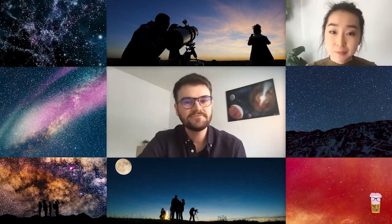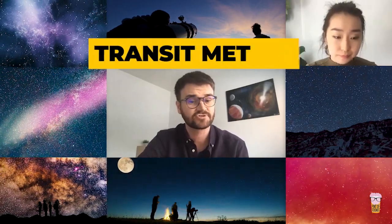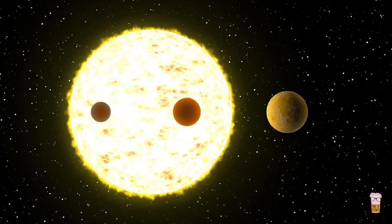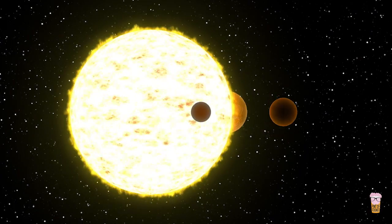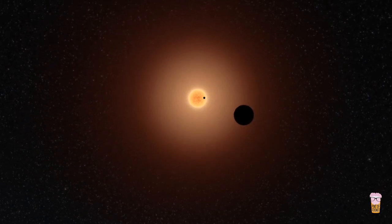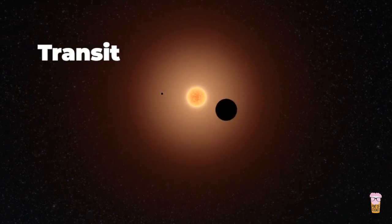Well there are a few different ways of doing this, but one of the most successful is called the transit method. Imagine looking through a telescope and you're looking at a star. If anything passes in front of that star, like a planet, it will block out some of the starlight. And this in astronomy is called a transit. The bigger the planet, the more starlight it will block.